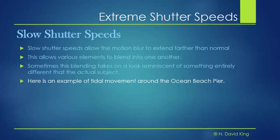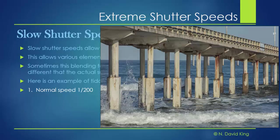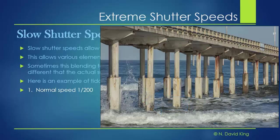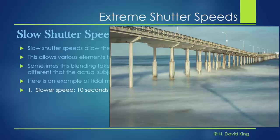Here's an example using tidal movement around an ocean beach pier. Here's a normal shot at 1/200th of a second — you can see water spray in the lower left. It looks like the droplets are frozen in the air, but if you zoom in you'd realize they're actually blurred a little bit. But suppose we really slowed things down. Here's a ten-second exposure from the same area. Look at what's happened to all that movement — you're starting to see the general pattern of it, but it's taken on a whole new reality.